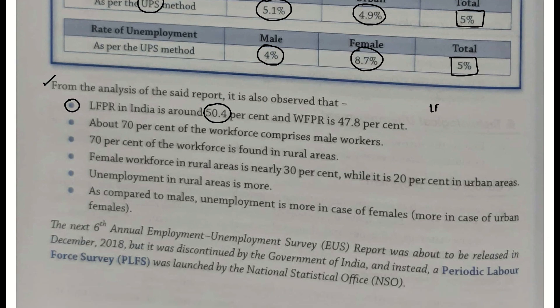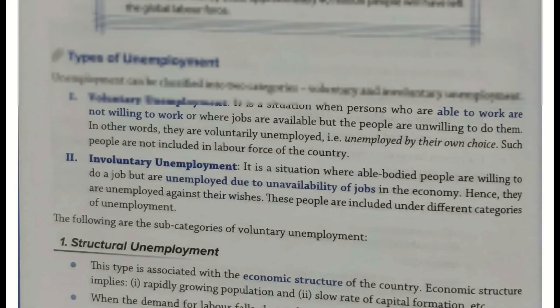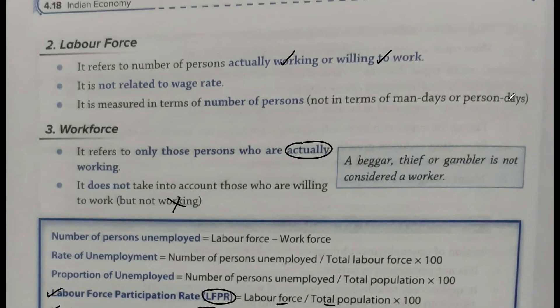Toh yeh jo labor force participation rate hai, yeh kaise nikla — labor force upon total population into 100 — yeh 50.4% hai. Workforce participation rate jo hai — workforce upon total population into 100 — yeh 47.8% hai. Yaani ki yeh aankda kya reveal karta hai? Ki actual number of working persons jo hai, woh as compared to working plus willing waale kam hai.